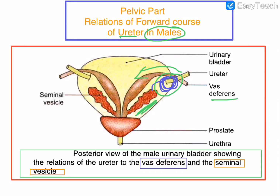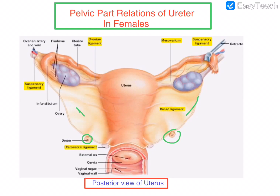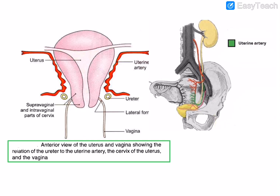Now we will see the relations of the forward course of the ureter in females. This is the posterior view of the uterus. The ureter lies in the extra-peritoneal connective tissue in the lower and medial part of the broad ligament. The next relation is with the uterine artery.